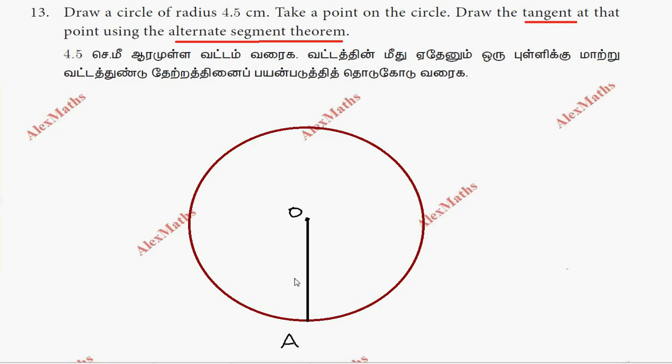Next, we choose two more points on the circle. That is point B and point C.